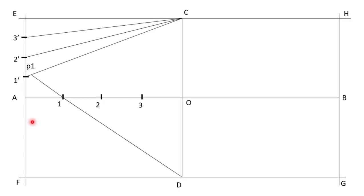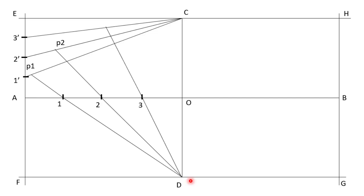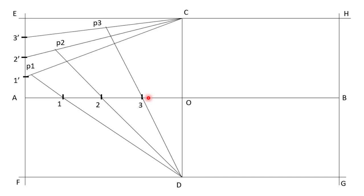Similarly, draw a line from D passing through point 2 and intersecting at C2', calling that point P2. Finally, draw line D3 and extend it until it intersects C3', calling that intersection P3. So now we have points P1, P2, P3, which are going to be points on the ellipse. This gives us the quarter portion of the ellipse, and we will obtain points for the remaining three quarters using the rule of symmetry.